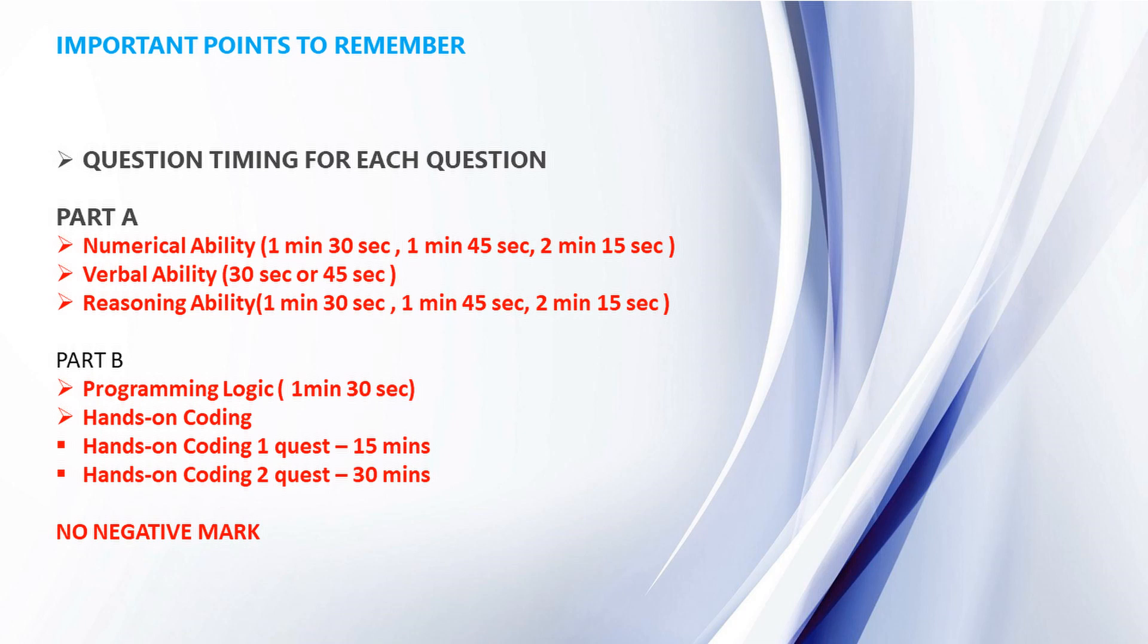Important points to remember: question timing for each question. For Numerical Ability based on the difficulty, the question timing will vary: 1 minute 30 seconds, 1 minute 45 seconds, 2 minutes 15 seconds. For Verbal Ability we have 30 seconds or 45 seconds. For Reasoning Ability we have 1 minute 30 seconds, 1 minute 45 seconds, 2 minutes 15 seconds.